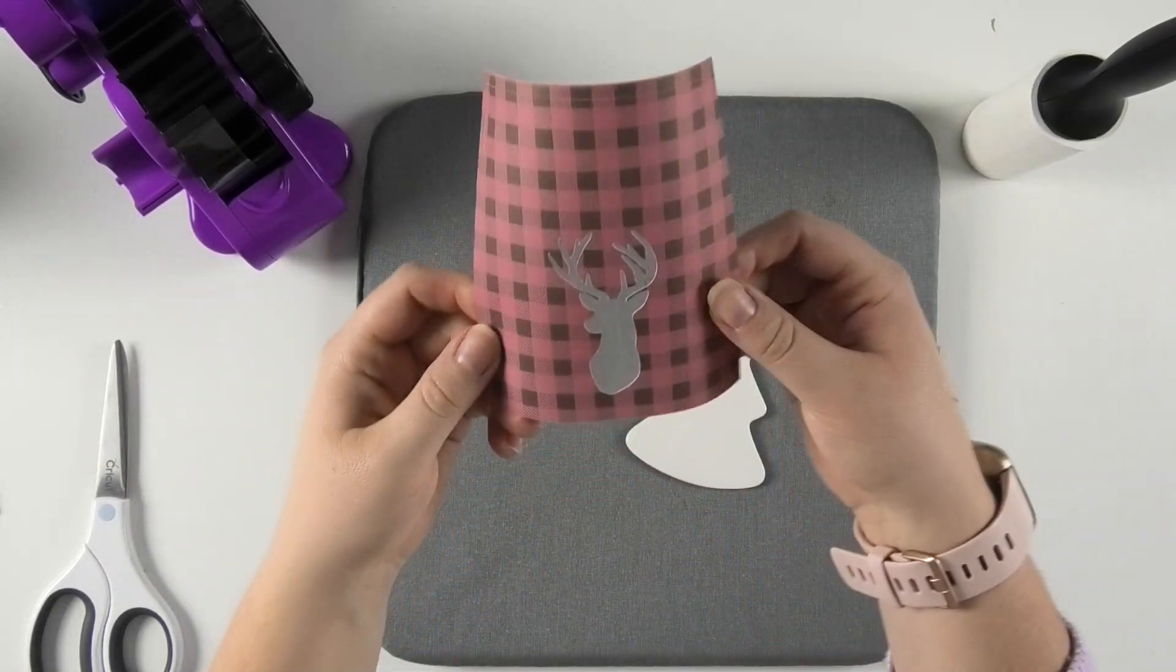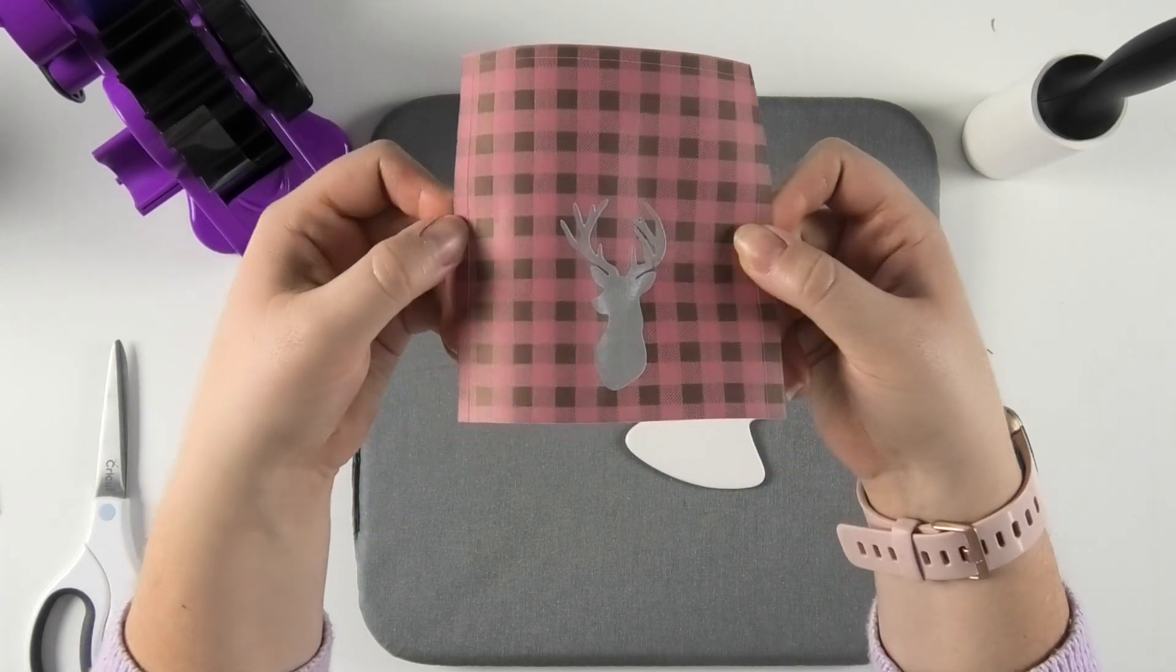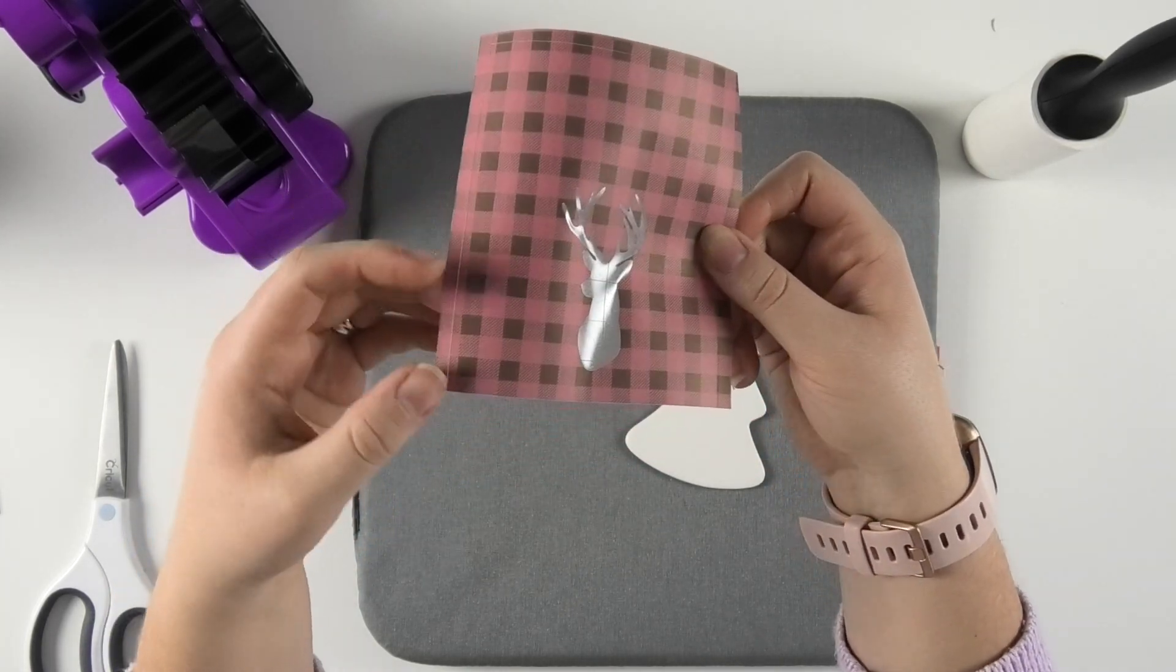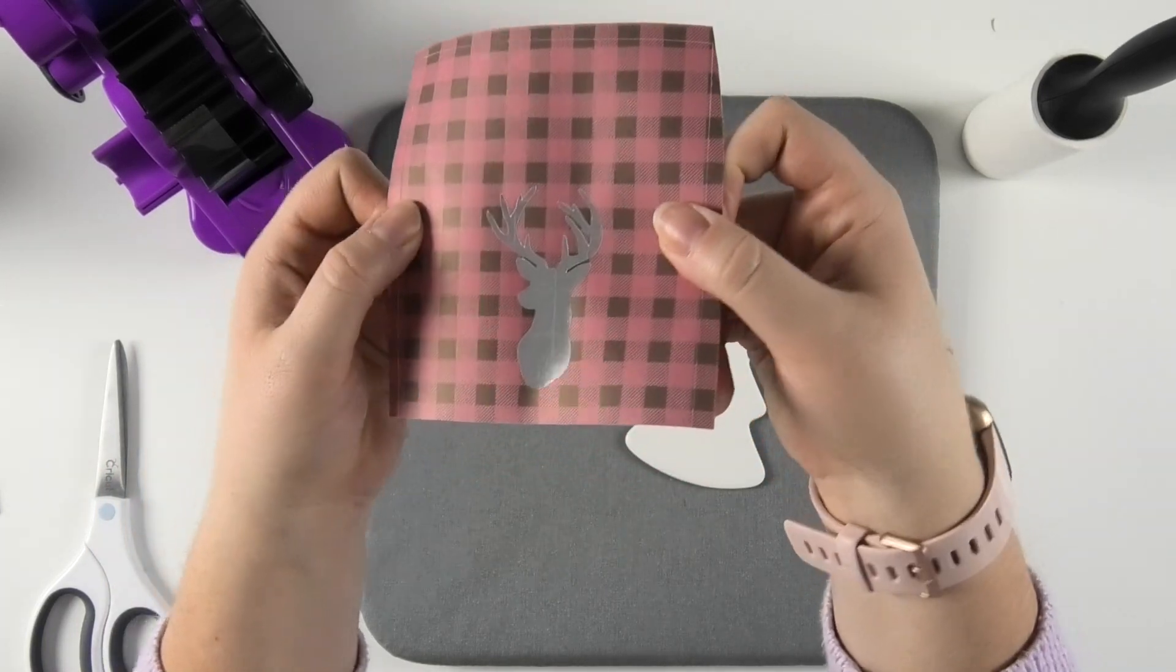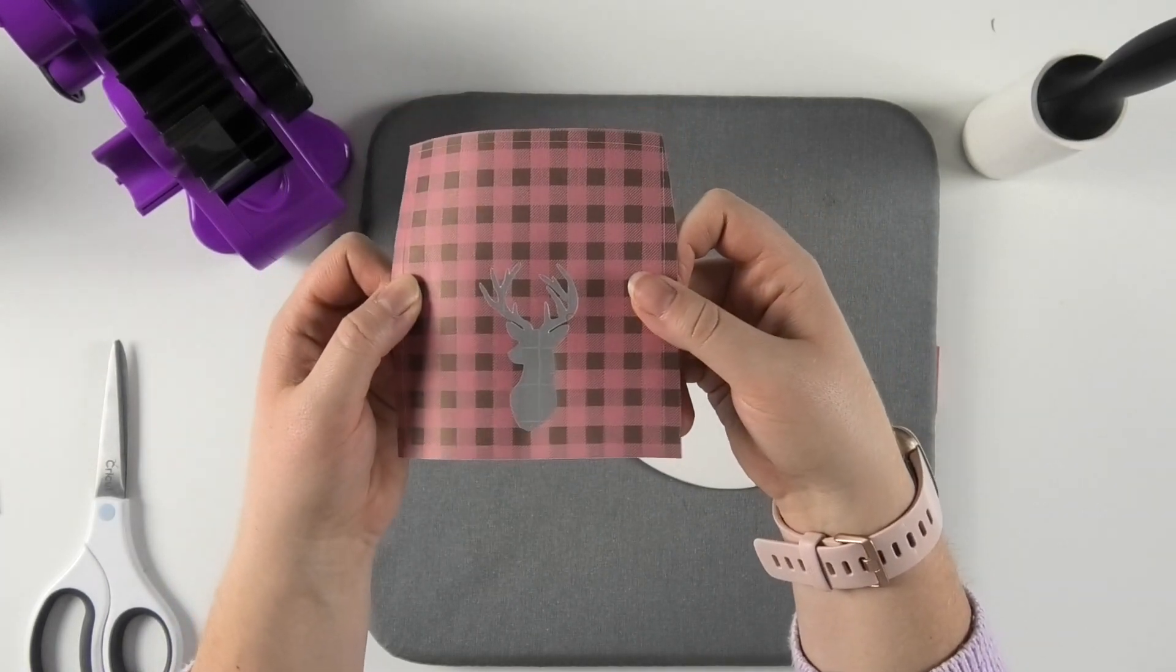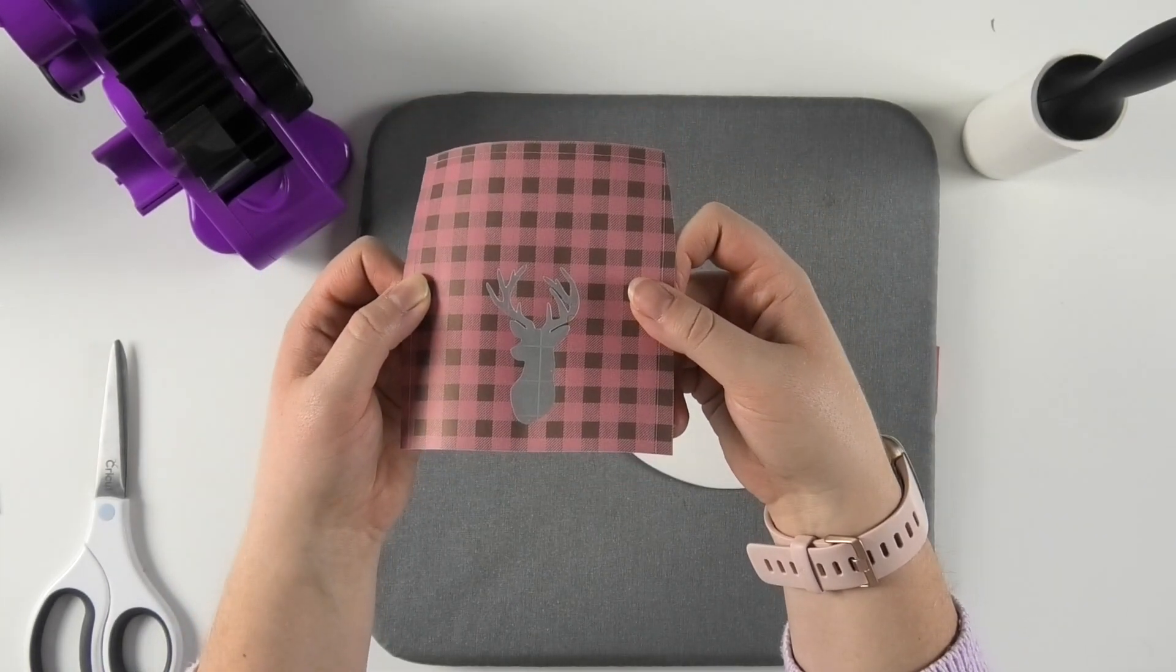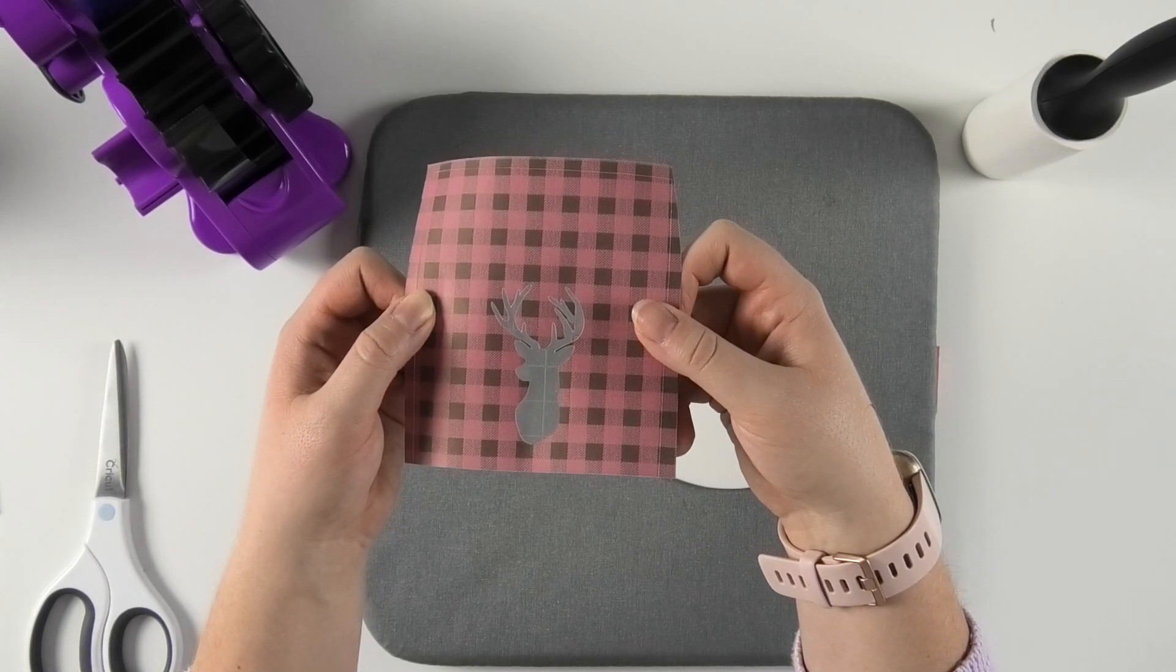When I cut my infusible ink, I wasn't really sure what design to cut out of it. So I just picked a box that's about the same size as the tree, which I actually didn't weed away in case I still need those pieces. And I added a silhouette of a buck here in the middle so that it has some element of design, but I didn't have to know exactly what size my ornament was in order to utilize this.